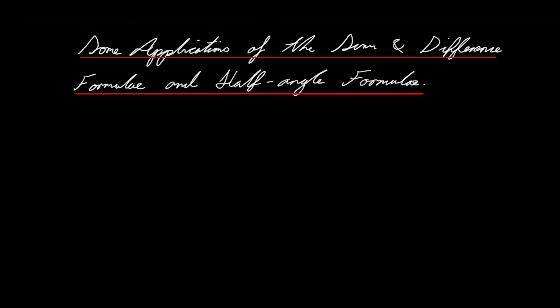So let's do an example of how we can do this. We can't do this with every angle which is not a special angle, but a lot of the times we can. So let's suppose we are asked to find the sine of 7π over 12.